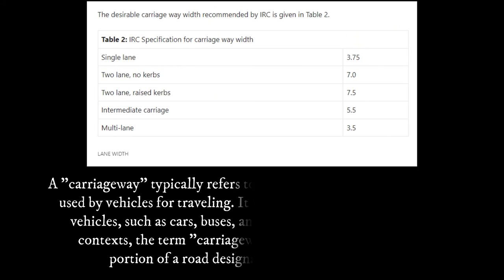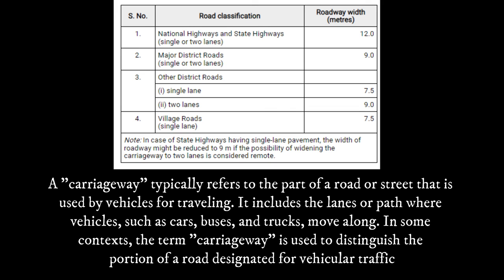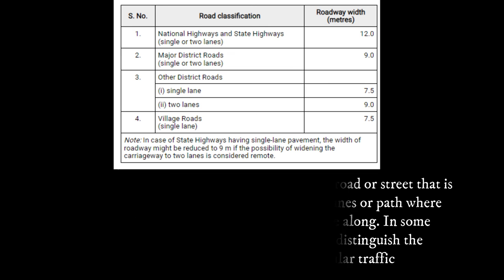Width of carriageway: the width of the road depends on the traffic lanes and number of lanes. A single lane needs at least 3.75 meters width due to vehicle size and clearance. For a two-lane road, each lane should be a minimum of 3.5 meters wide, considering the required side clearance of 0.53 meters on both sides and 1.06 meters in the center, for safety and speed.